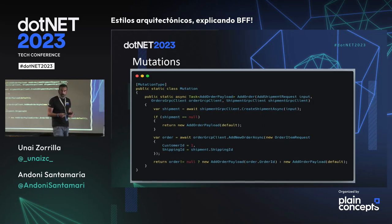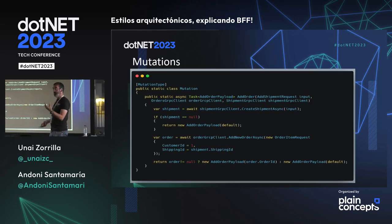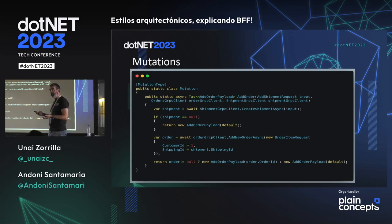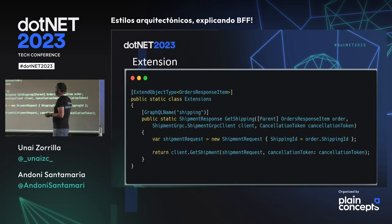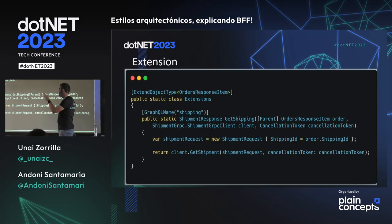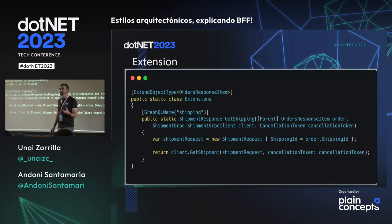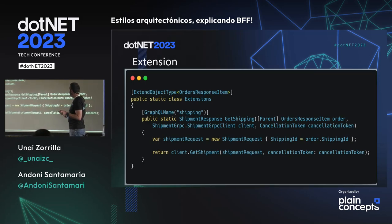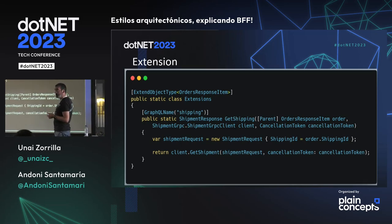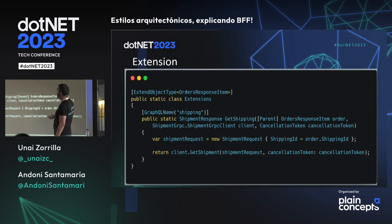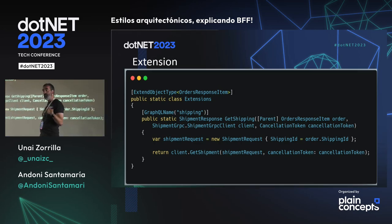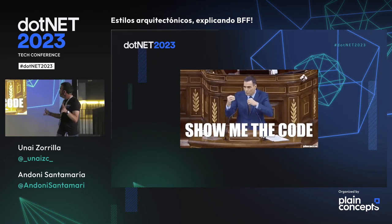También admite mutations: en SDL puedo hacer una mutación para añadir una orden con un envío inicial. Lo que haré es primero crear el shipment; si el shipment es correcto me devuelve el ID del shipment, y entonces lo que voy a hacer es crear la order con ese shipment ID. Hay una parte muy importante en esta historia: tú puedes extender un nodo de GraphQL, o una propiedad de GraphQL. En este caso, si yo tengo orders, quiero que orders, aparte de todas las propiedades del order response item, tenga también un nodo que sea shipping.